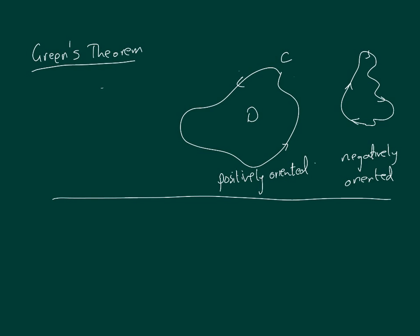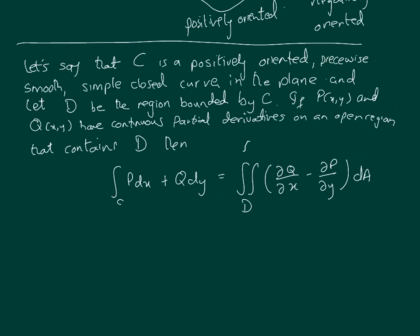Now we come to the statement of Green's theorem. Let's say that C is a positively oriented piecewise smooth, simple closed curve in the plane, and let D be the region bounded by C. If P(x,y) and Q(x,y) have continuous partial derivatives on an open region that contains D, then the line integral PDX plus QDY, there's our C here.